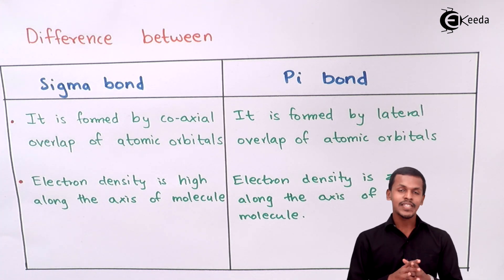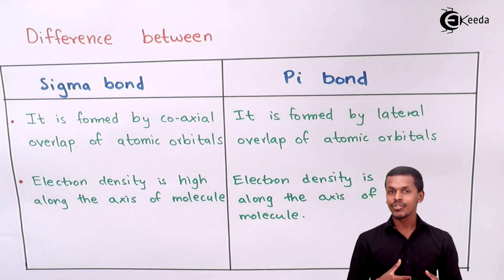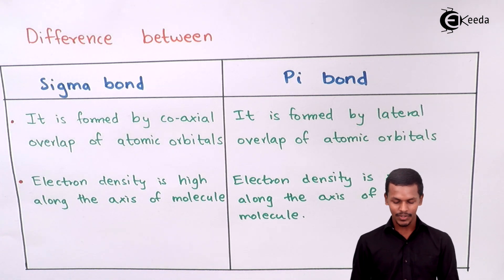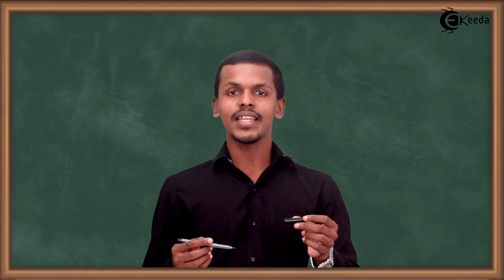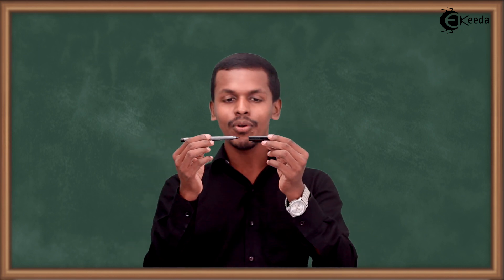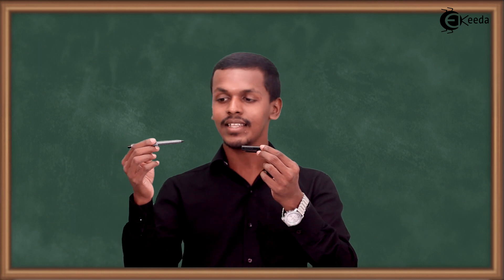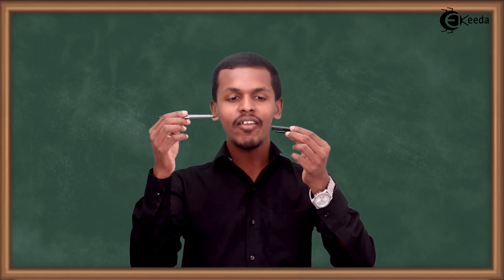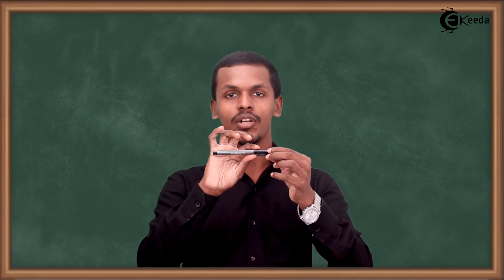Sigma bond is formed because of the coaxial overlapping of the atomic orbitals. For example, suppose I am considering atomic orbitals that are along only one axis — one is in the x-axis and another is also in the x-axis. If they overlap with each other in such a way, then a sigma bond is formed.